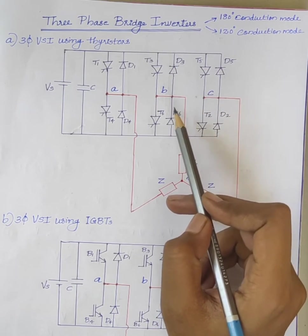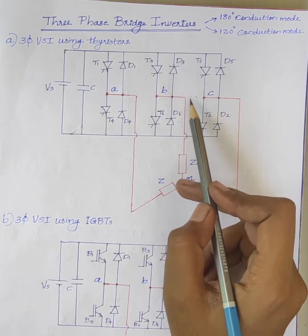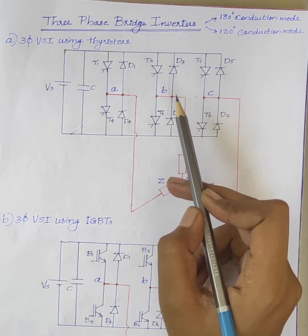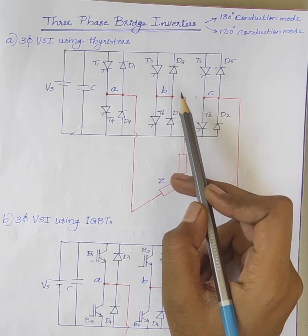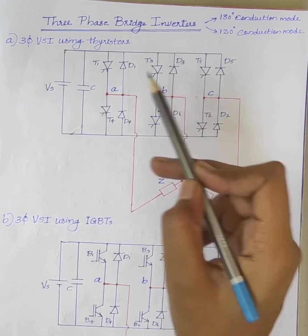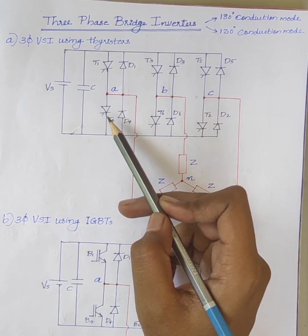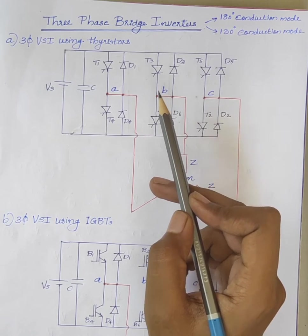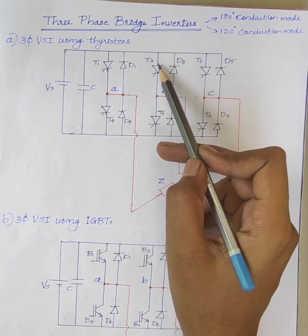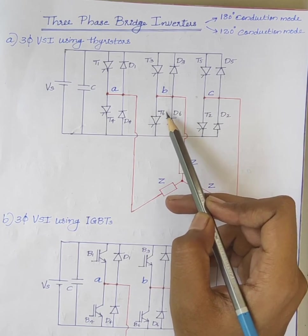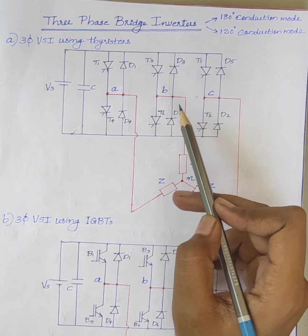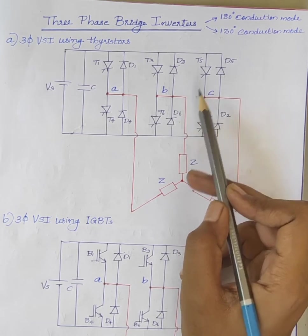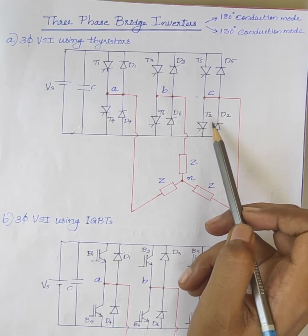The circuit is divided into 3 segments. Segment 1 consists of a pair of thyristors T1 and T4. Second segment consists of the pair of thyristors T3 and T6. And the third segment consists of thyristor pair T5 and T2.